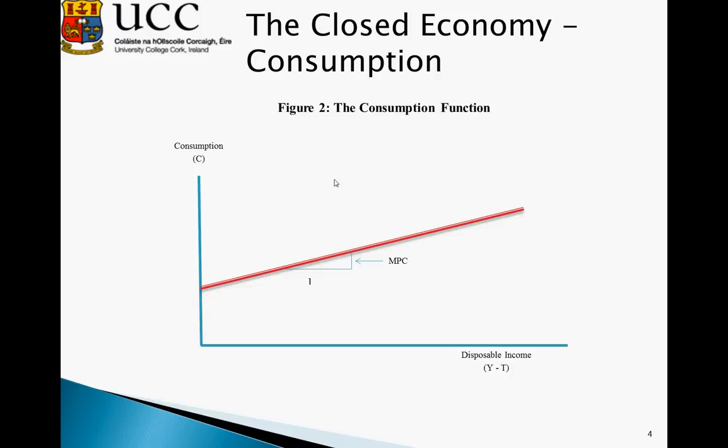We describe the relationship between consumption and disposable income using the consumption function, which gives us the marginal propensity to consume. This is, given an extra euro of income, how much consumption will increase by. If an individual is given one euro of extra income, they can choose to consume between zero and one euro of that extra income. If they choose to consume it all, they save none; if they choose not to consume any, they save all of that one euro. So if someone decides to consume 70 cent of that euro, they save 30 cent.